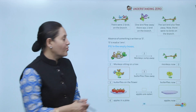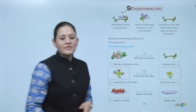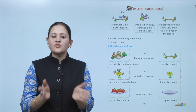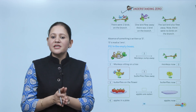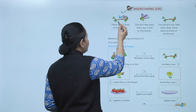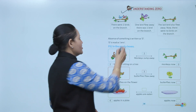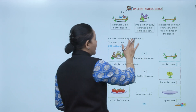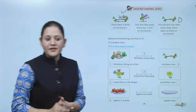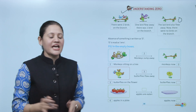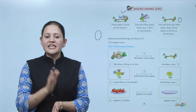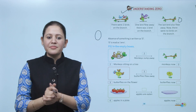Next: understanding zero. There were two birds on the branch. One bird flew away — there was one bird left. The last bird also flew away. Now there is no bird on the branch — so two birds, one flew away, one bird left; that bird also flew away, so there is no bird — that means zero birds. Absence of something is written as zero. This is zero, read as Z-E-R-O.